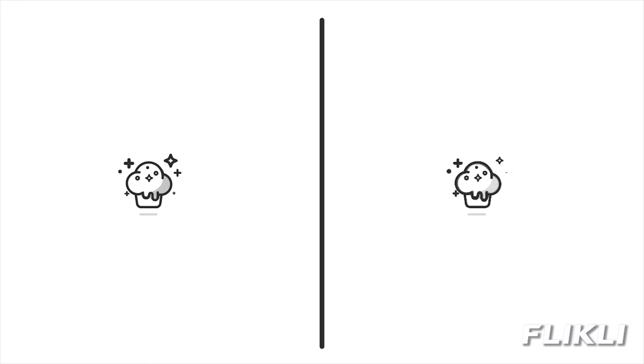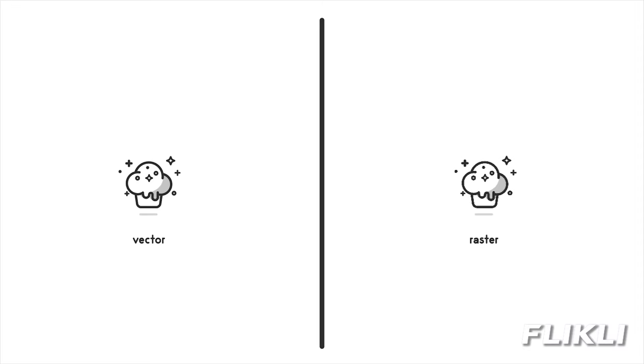Look at these two cupcakes. The one on the left is a vector image, and the one on the right is a raster image. Let's see what happens when we zoom in.